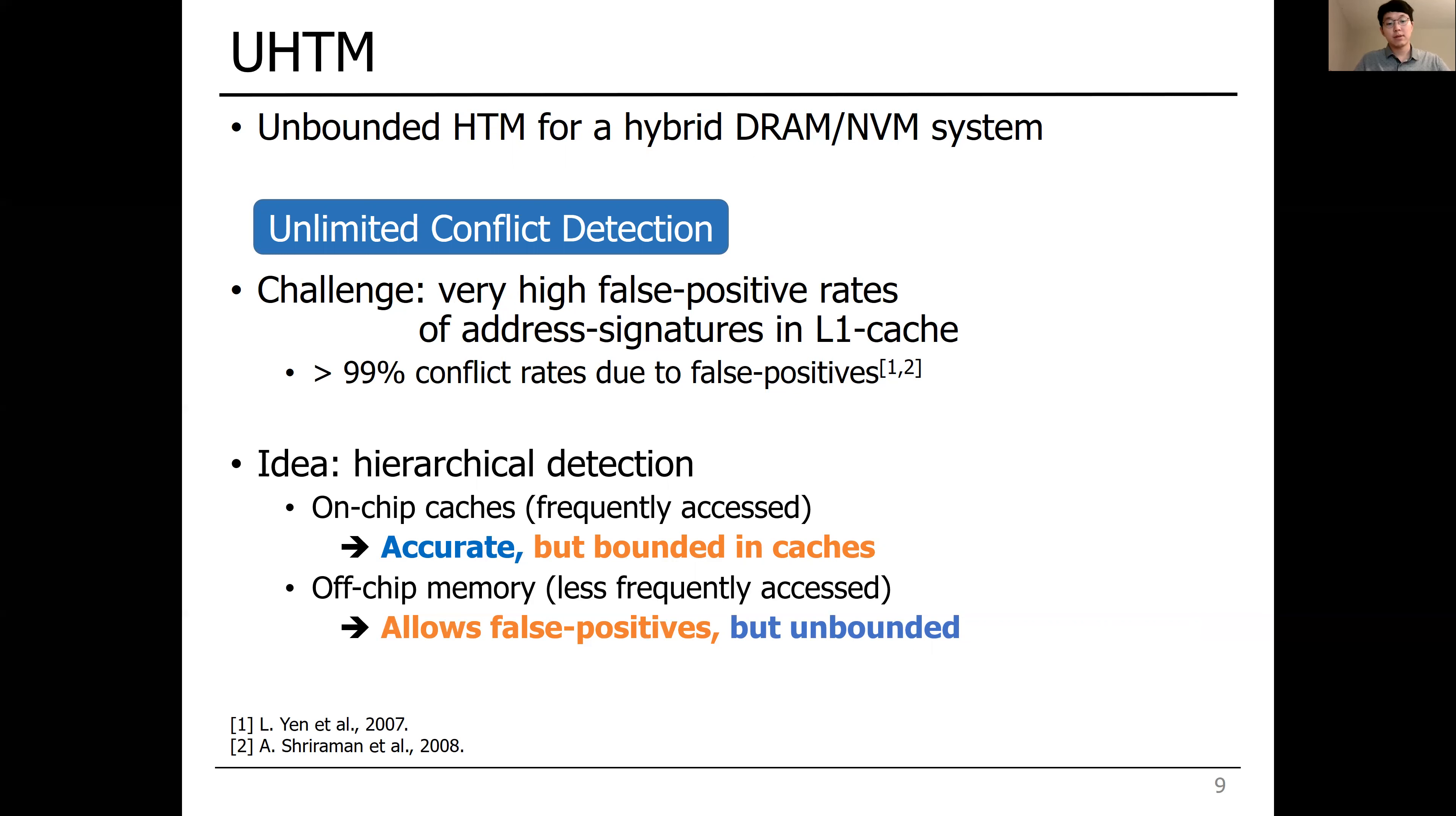However, for off-chip memory, it is okay to be less accurate since they are less frequently accessed, allowing false-positives, but it should be unbounded.